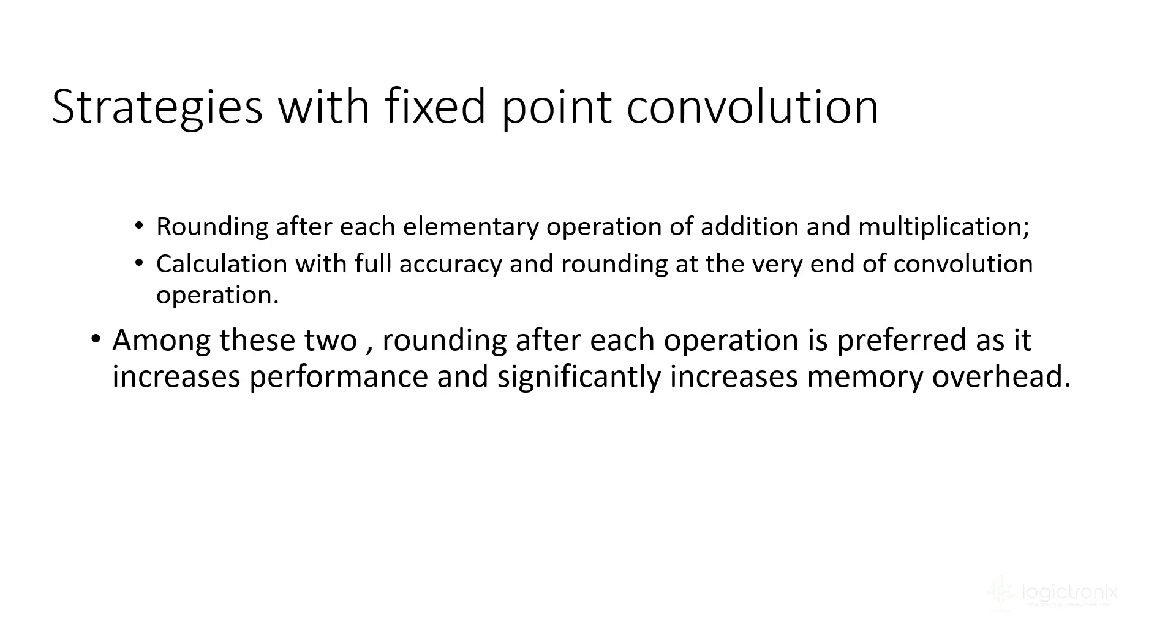In fixed weighting convolution, there are some strategies. You can round after every elementary operation in addition and multiplication, or we could calculate every step with full accuracy and round off at the end of operation. Among these two, rounding in every step is preferable because it increases the performance and there is not much difference in accuracy between these two strategies.